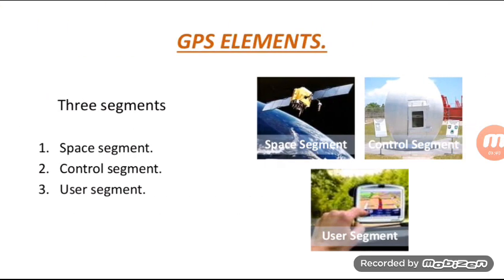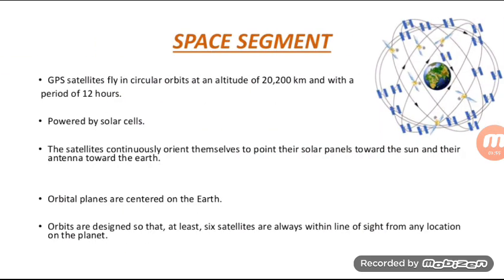GPS elements are divided into three segments: the space segment, the control segment, and the user segment. In the space segment, GPS satellites fly in circular orbits at an altitude of 20,200 km with a period of 12 hours. Powered by solar cells, the satellites continuously orient themselves to point their solar panels toward the sun and their antennas toward the earth. Orbits are designed so that at least six satellites are always within line of sight from any location on the planet.